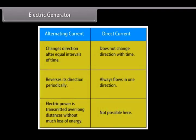Electric generators operate based on electromagnetic induction, that is whenever a conductor moves to a magnetic field a current is induced in this conductor. If a magnet is spinning inside a coil alternating current is induced in the coil. Alternating current changes direction after equal intervals of time. The other type of current is direct current which does not change direction with time.